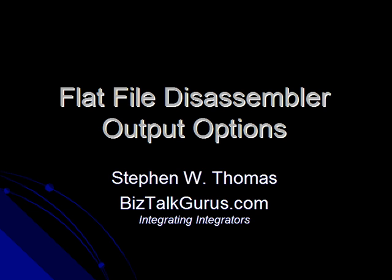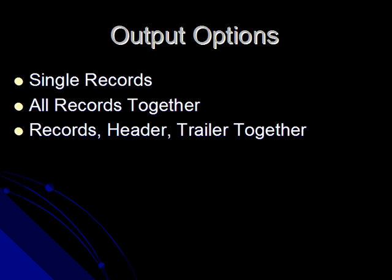This would arrive into BizTalk as a single batch or interchange. We have a couple different output options for how we want BizTalk to handle this single flat file document. We can have BizTalk split it all up and debatch it into single records — it'll actually strip off the header and trailer and give us all our detailed records as single XML documents.